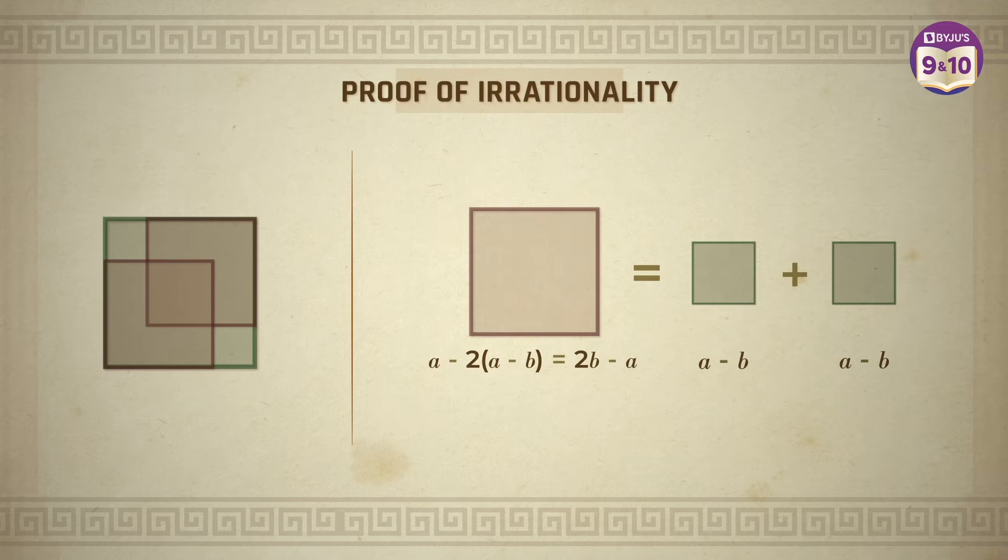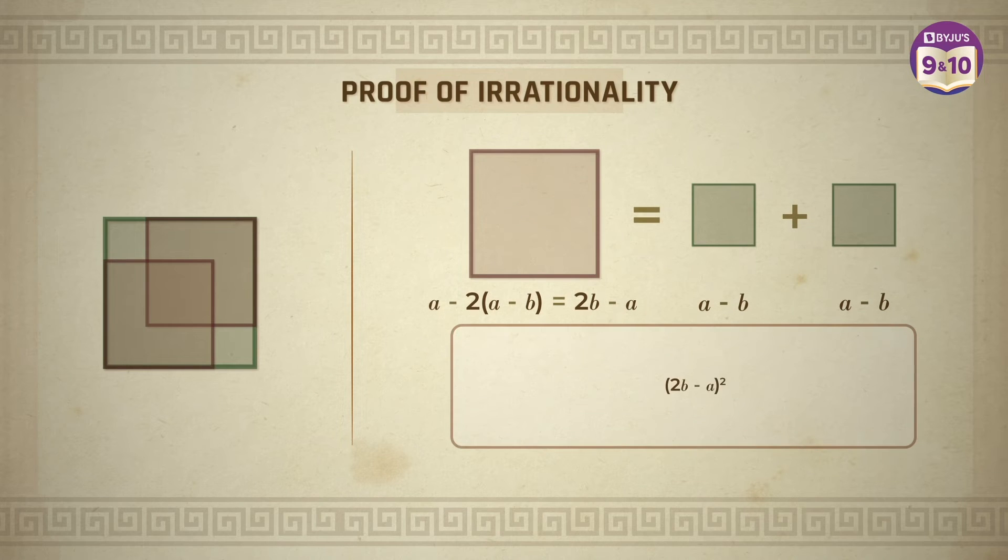And we can express this as the area of this square will be 2b minus a whole square which is equal to the area of the other two sections will be twice of a minus b whole square. So we can say that 2b minus a whole square is equal to twice of a minus b whole square.